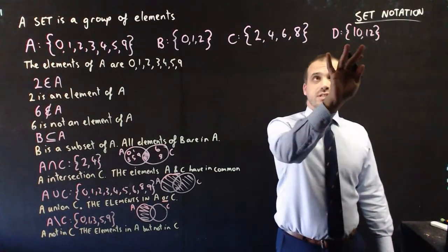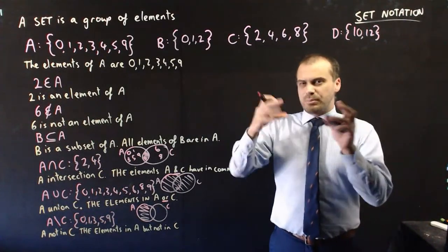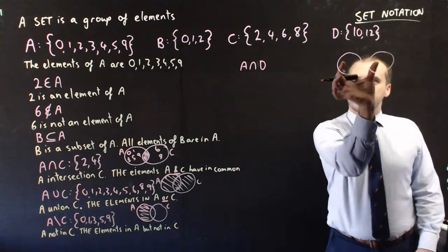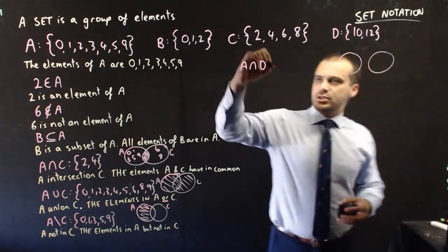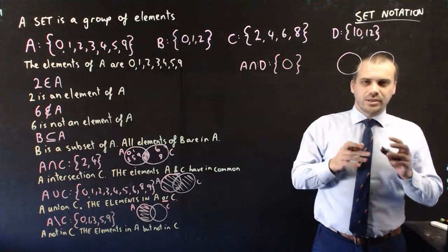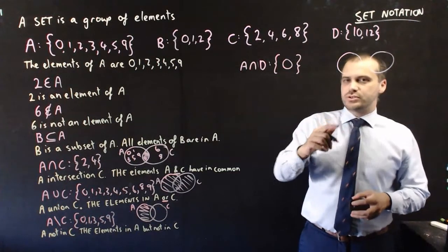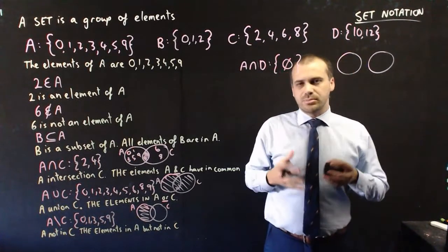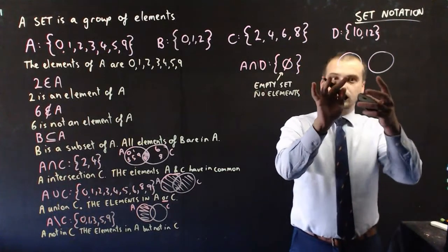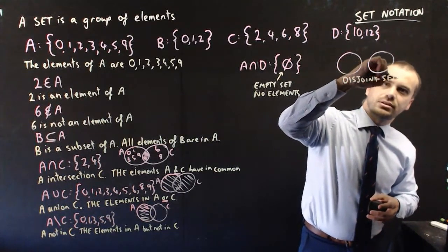For my next trick, I need to insert a new set D with elements 10 and 12, because I want to show what happens when you try to find the intersection of two sets that don't meet. A intersection D — A looks like this and D looks like this; they don't have any overlap. A lot of people think the result contains 0, but 0 is already an element of A, so we can't use 0 here. We have to use this symbol — the empty set. A intersection D is an empty set. Two sets with no elements in common are called disjoint sets, because they're not joined.